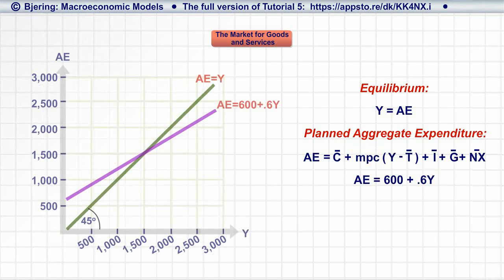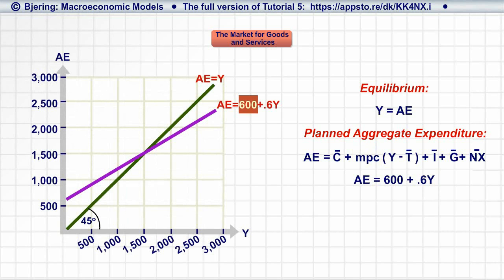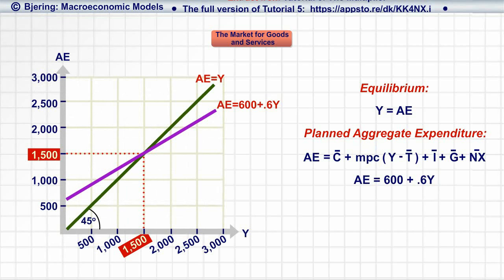This is reflected in an AE curve that is a straight line with an intercept of 600 and a slope, or MPC, of 0.6, generating equilibrium output, income, and expenditure of 1,500 each.